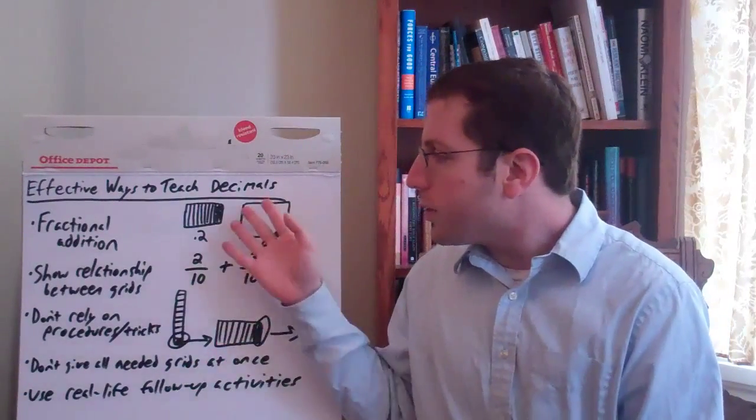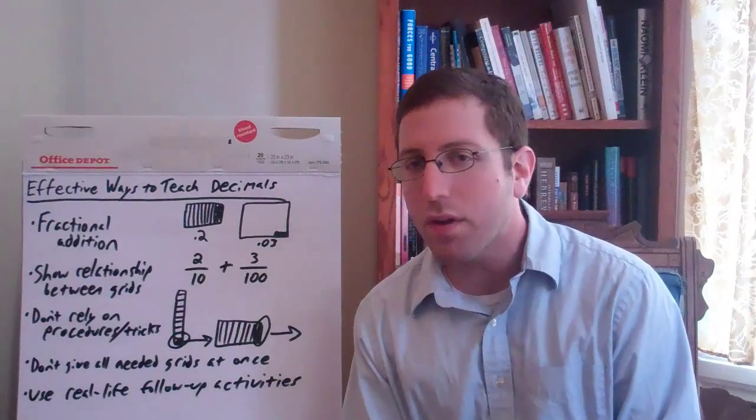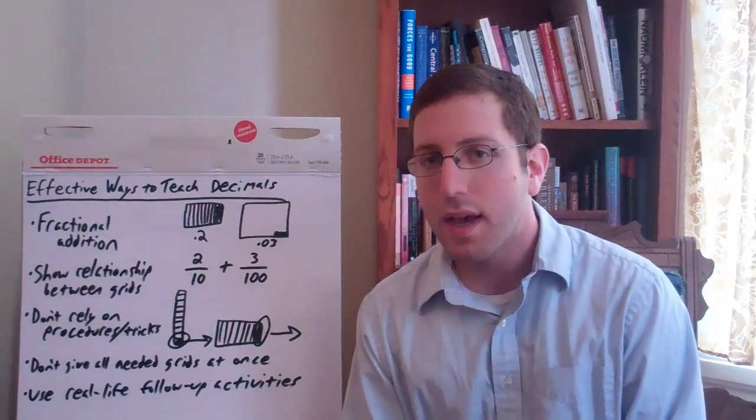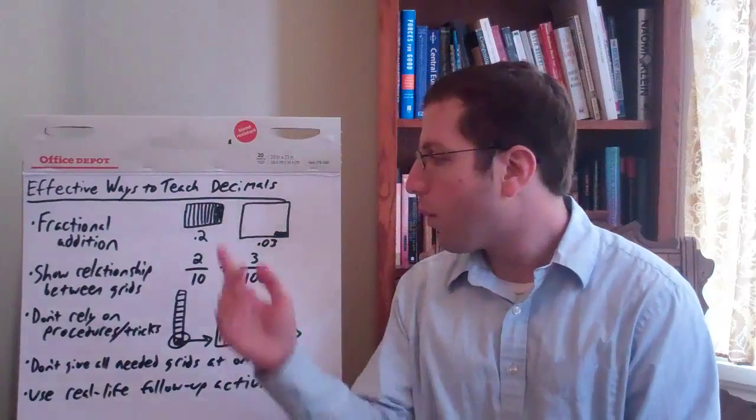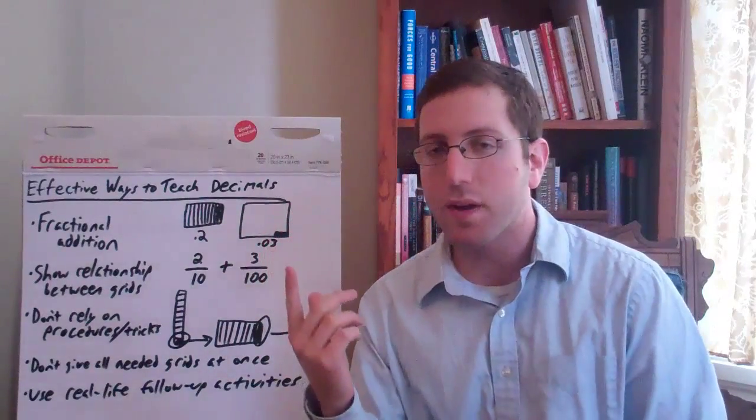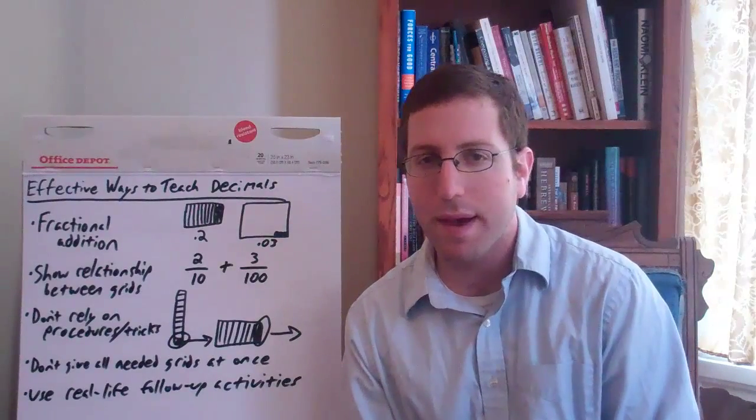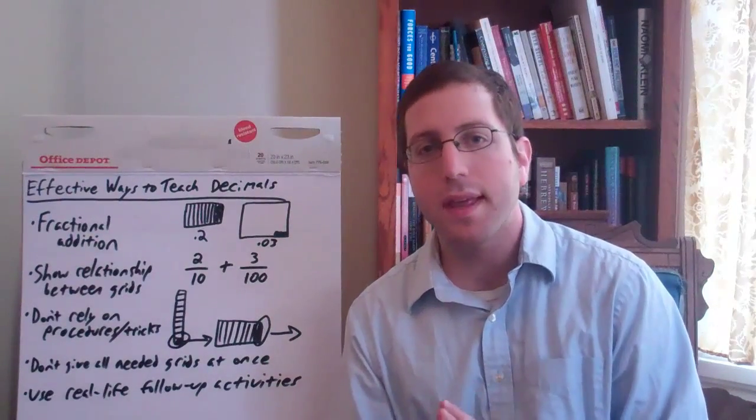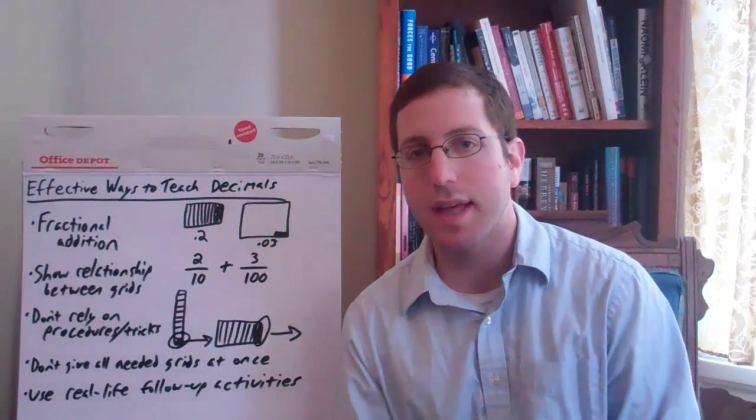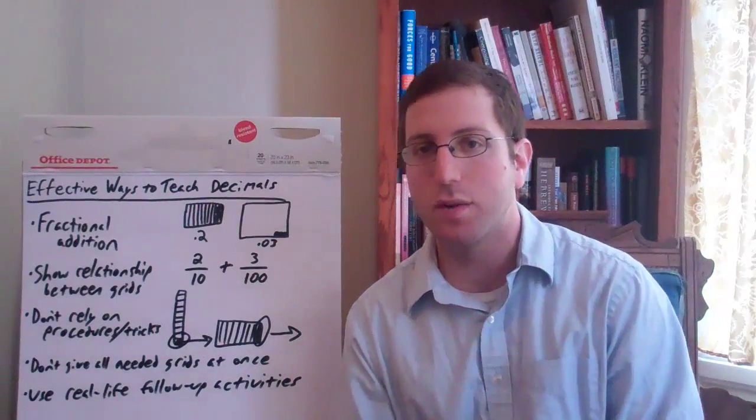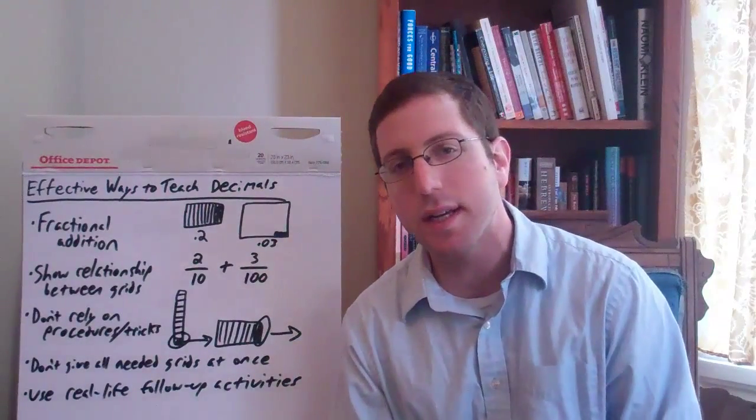Also, if you are using the decimal grids, don't give all of them all the grids at once. If we are having students represent the number 0.23 and we just give them the tenths and the hundredths grid, they don't have to work to think about the way that the place values work together. They're just like, okay, I do my tenths, I do my hundredths. It's a very flimsy understanding of it.